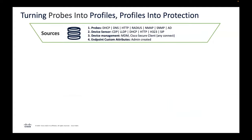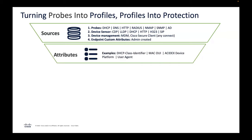As for dynamic profiling, we think of profiling as the backbone of visibility — the ability to classify those endpoints. It can be done statically, such as via MAB, or dynamically based on attributes collected by ISE. Those attributes come from sources: probes such as DHCP, HTTP, RADIUS, NMAP; the device sensor; device managers; and custom attributes. Those sources give us details like DHCP class ID, MAC OUI, AssetX device platform, user agent, and so on.